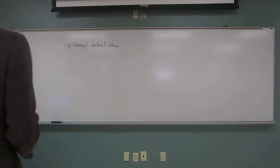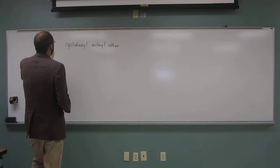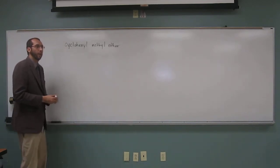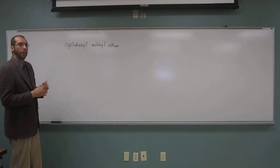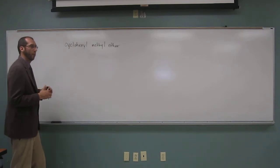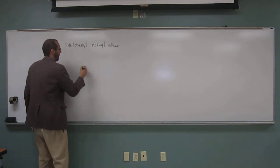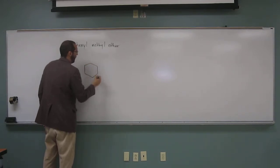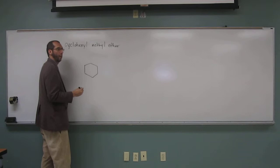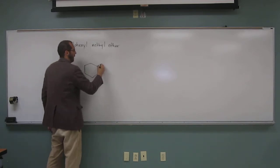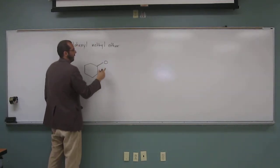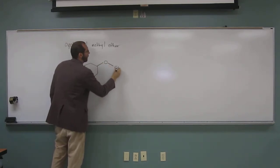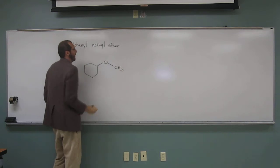Help me draw this molecule up here. What's the structure of cyclohexyl methyl ether? So what do we have to do first? You want to draw a cyclohexane. And then attach that to an oxygen. And the oxygen is attached to a methyl. And that's it.